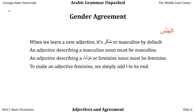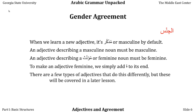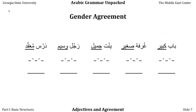To make an adjective feminine, we simply add ta' marbuta to its end. There are a couple of exceptions to this, but we're not going to deal with them today. Let's take a look at some examples of gender agreement.